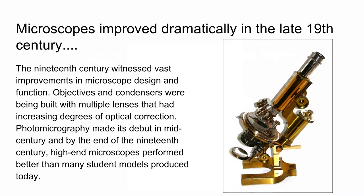Microscopes improved dramatically in the 19th century. They had vast improvements in design, function objectives, and condensers were being built. Multiple lenses had increasing degrees of optical correction. In the early days, lenses had what was called chromatic aberration, meaning they were not adjusted for colors — different wavelengths of color were not corrected for. When you were looking at something in the microscope, you'd see all this haze of color, making getting details difficult. Photomicrography made its debut in the mid-century, and by the end of the 19th century, high-end microscopes performed much better than even student microscopes produced today.